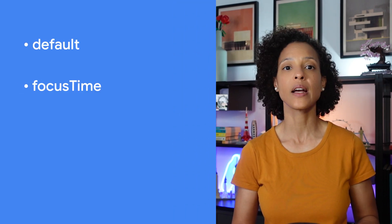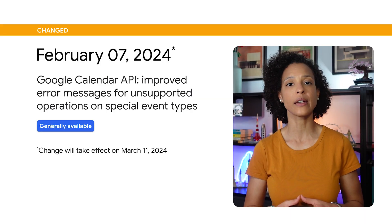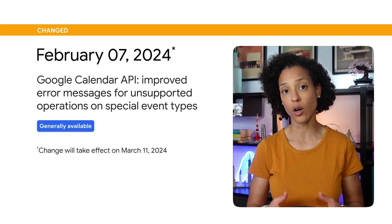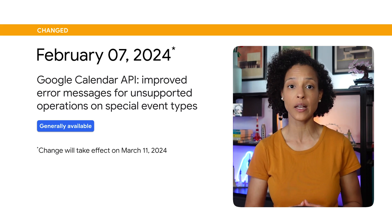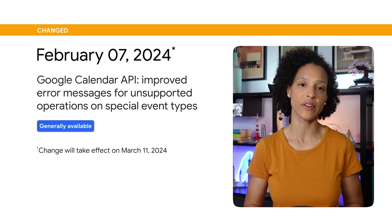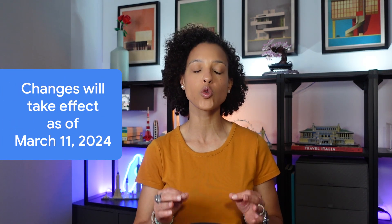The default optional query parameters for both methods are: default, focus time, out-of-office, and working location. To help with error handling, error messages will be returned when unsupported operations are attempted on special event types such as working location, out-of-office, and focus time events. Please note that this change and the two previous ones will take effect as of March 11, 2024.